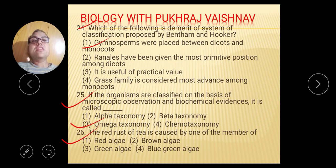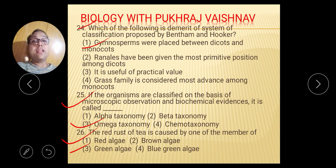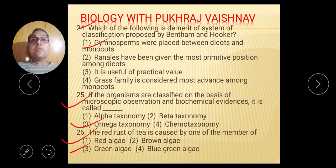Question number 26: The red rust of tea is caused by one of the members of green algae. Please write the name in the comment section so that you can revise this topic.